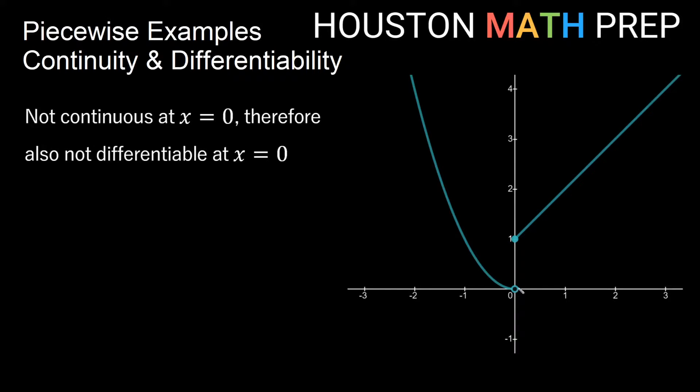this is not continuous at x equals zero on the y-axis because it's not continuous. Remember when something is not continuous, it's also not differentiable. So this is neither continuous at x equals zero nor is it differentiable at x equals zero.